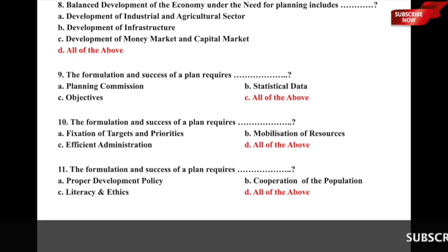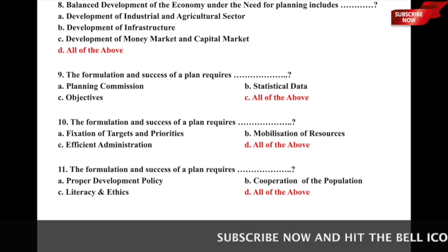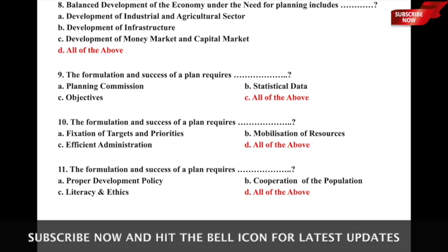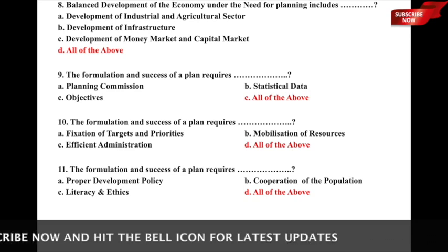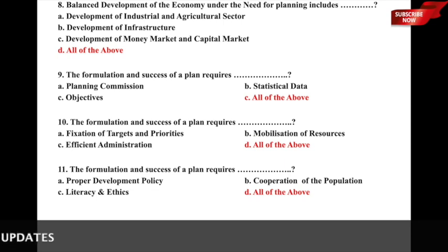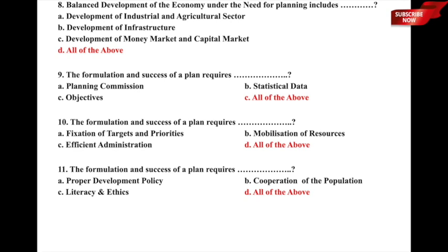Question 9: The formulation and success of a plan requires dash — whether it is a) planning commission, b) statistical data, c) objectives of the plan, or d) all of the above. The formulation and success of a plan requires all of these: a planning commission, underlying objectives, and statistical data. Option d) all of the above is the correct answer.